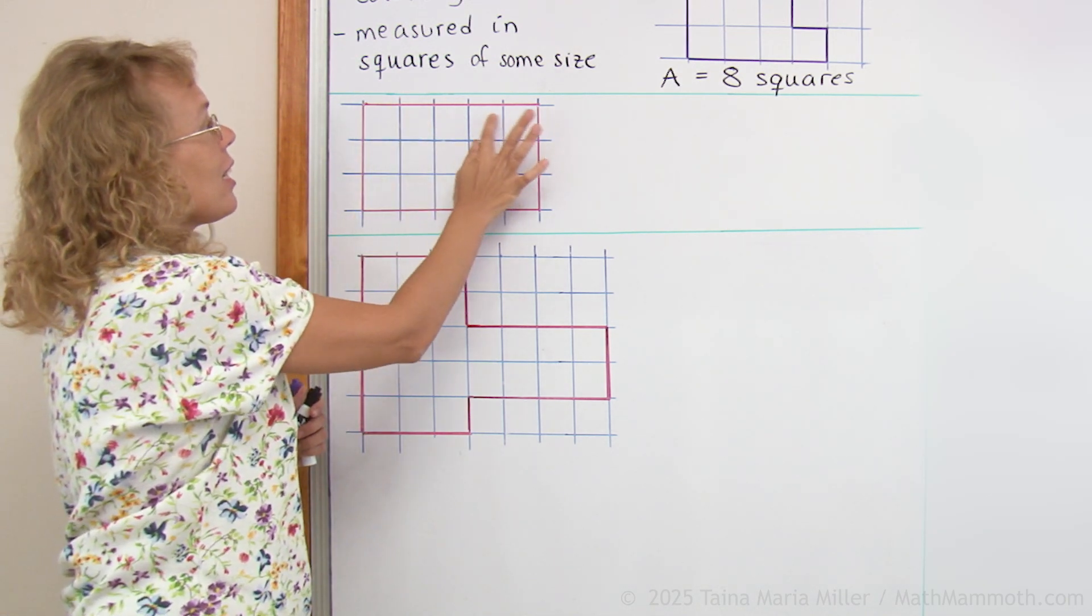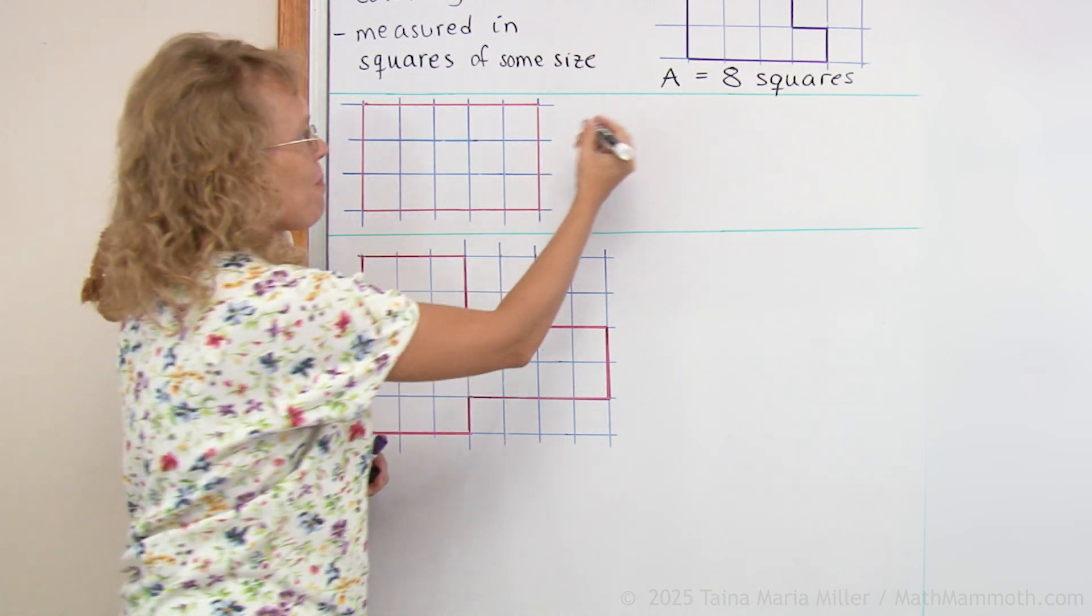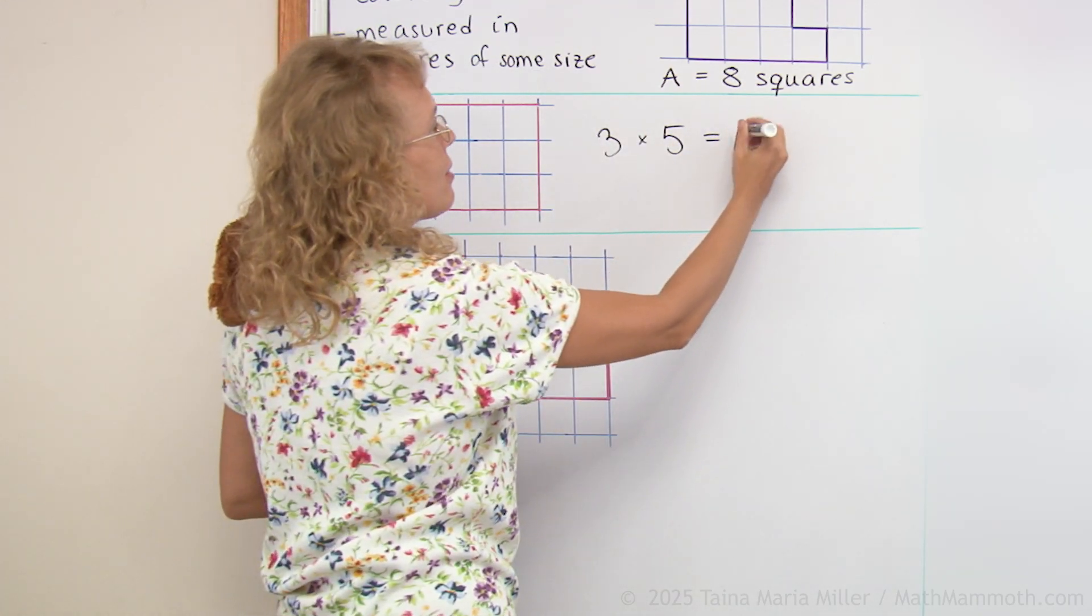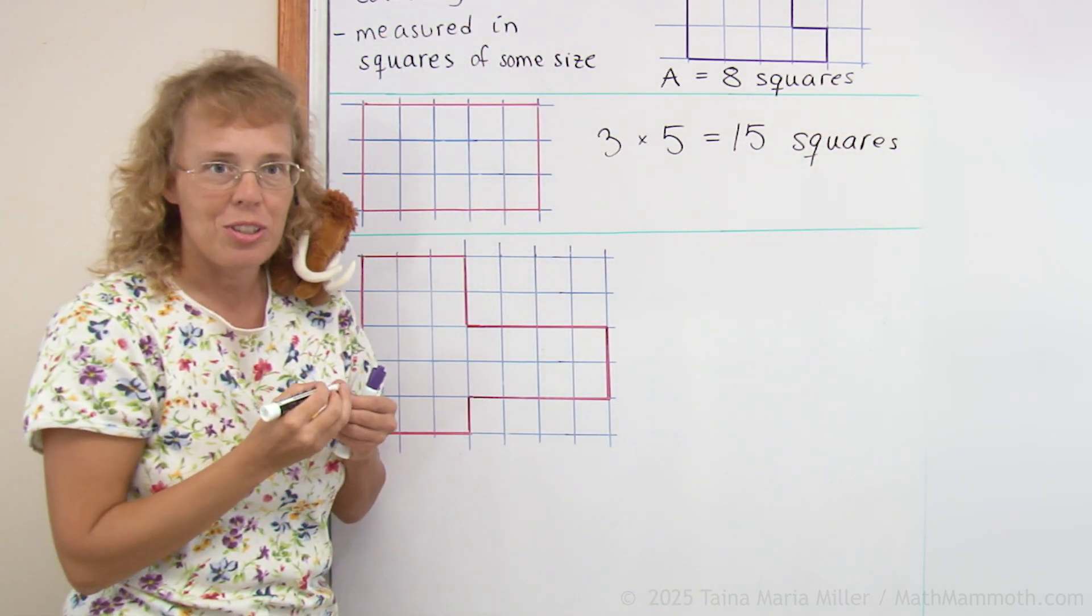There are basically 5 here, 5 here and 5 here or 3 times 5. So I can find the area by multiplying. I get 15 squares or square units.